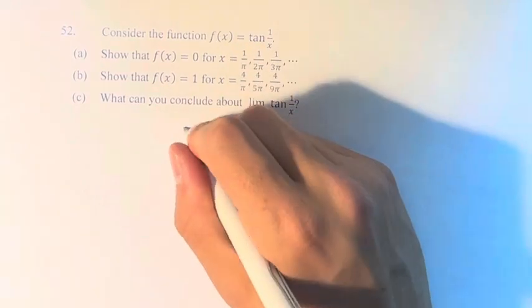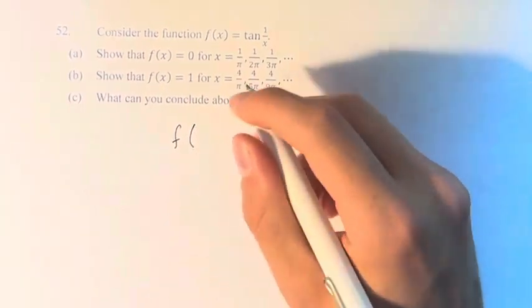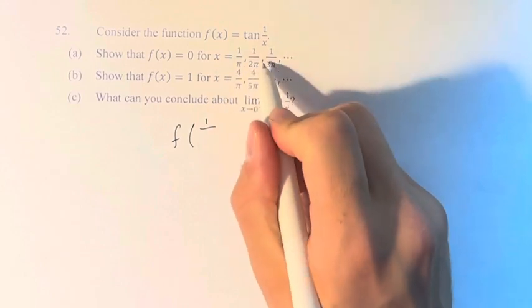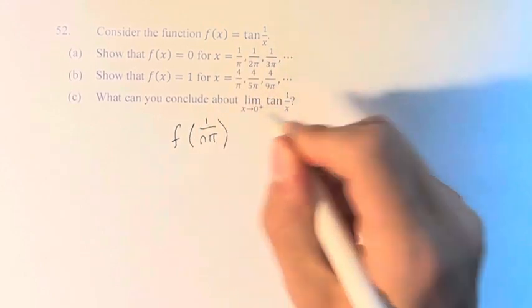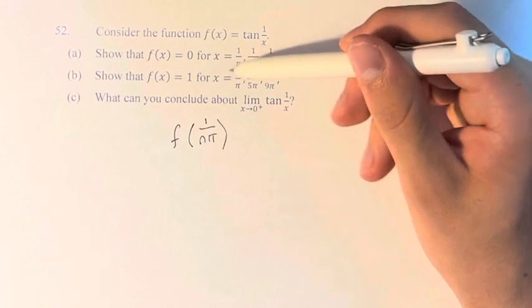If we look at this, f(1/nπ), where n is just some number attached to the π, this is equal to tan(1/(1/nπ)), which is itself nπ.